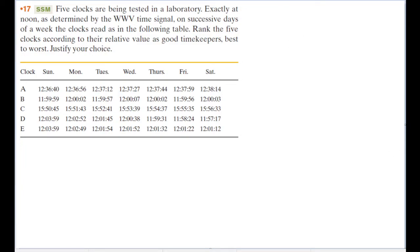Five clocks are being tested in the laboratory. Exactly at noon, as determined by the WWV time signal on successive days of a week, the clocks read as in the following table. Rank the five clocks according to their relative value as good timekeepers, best to worst. Justify your choice.